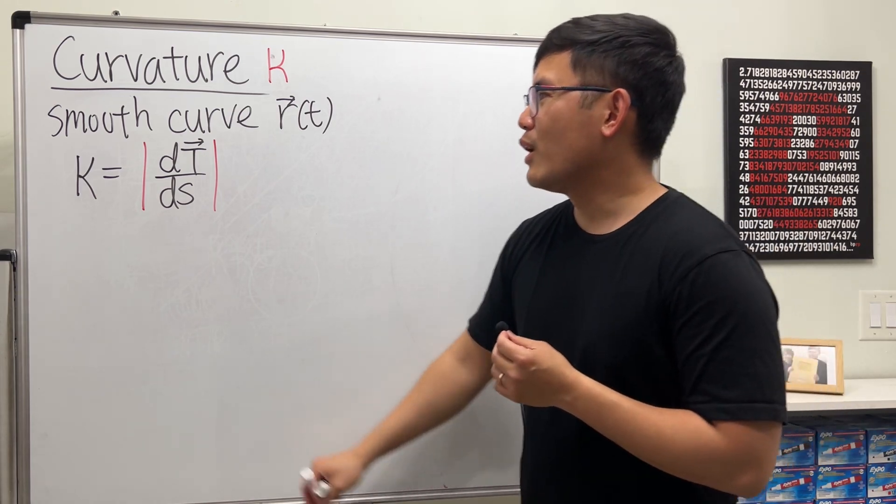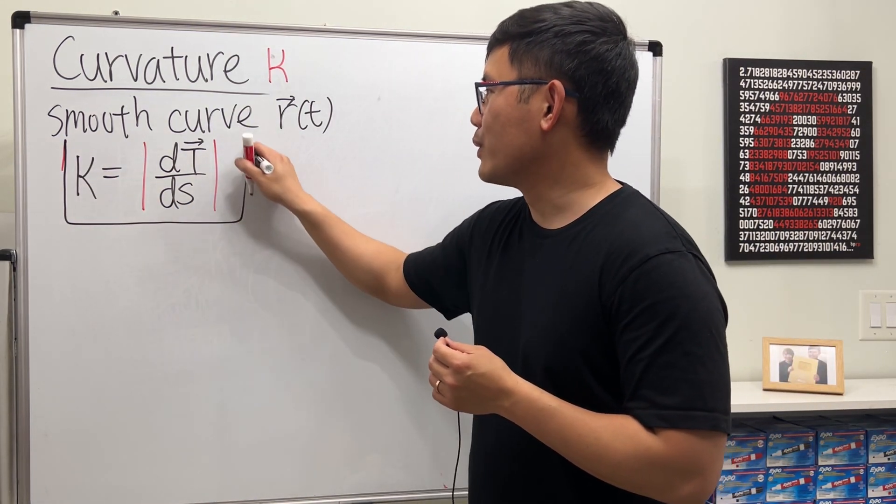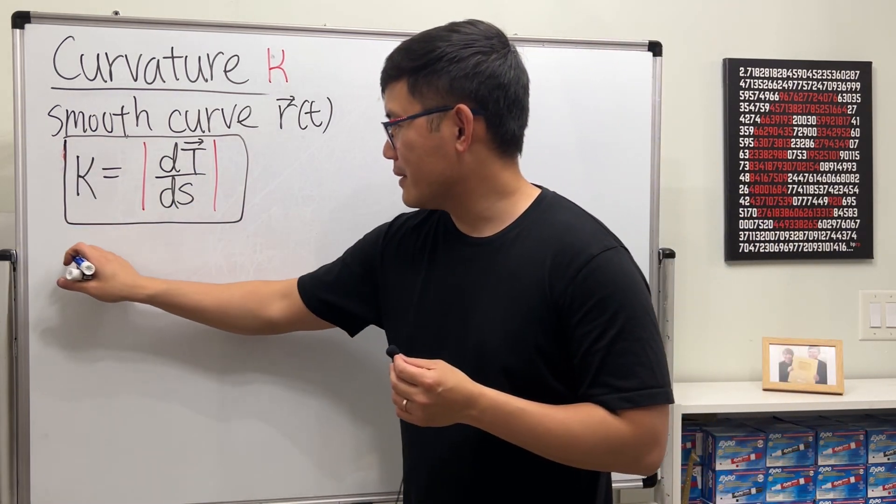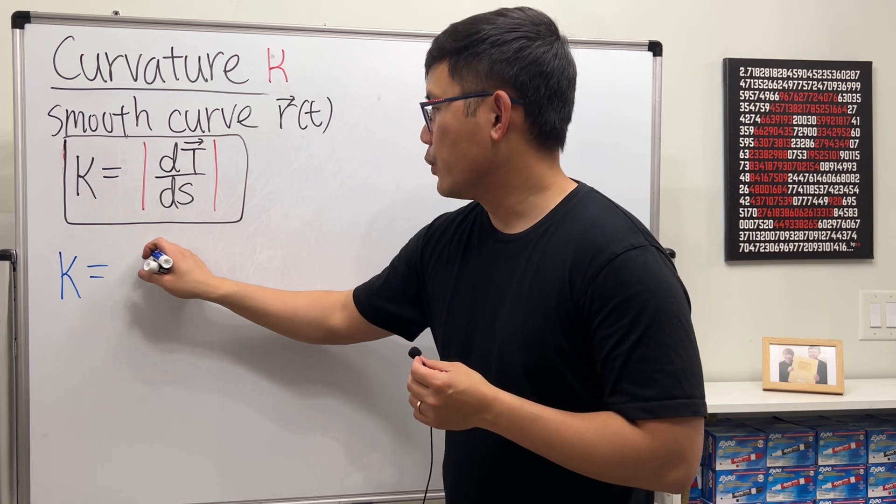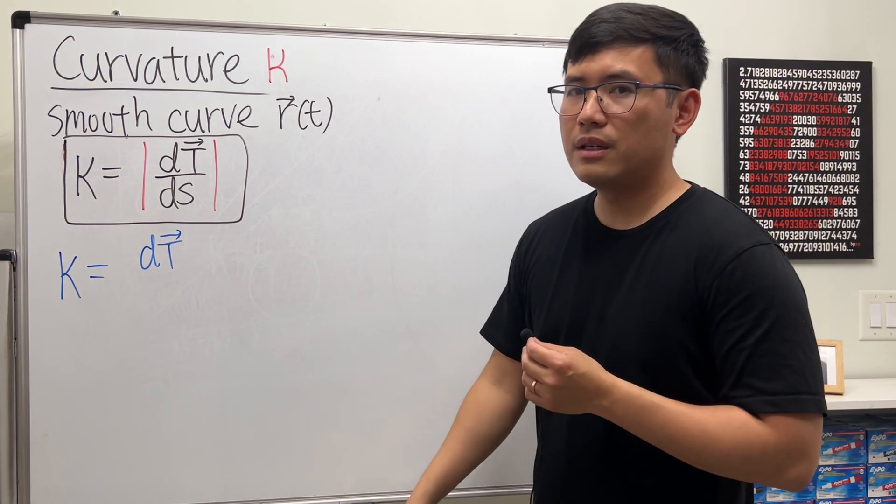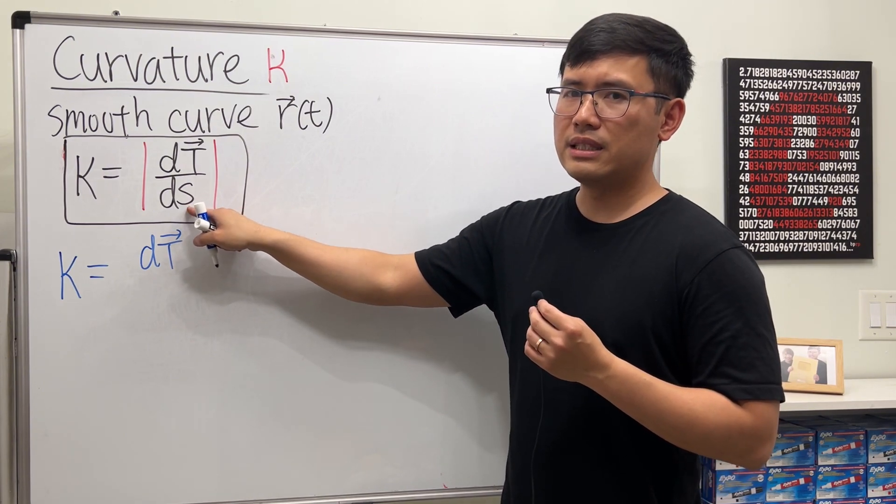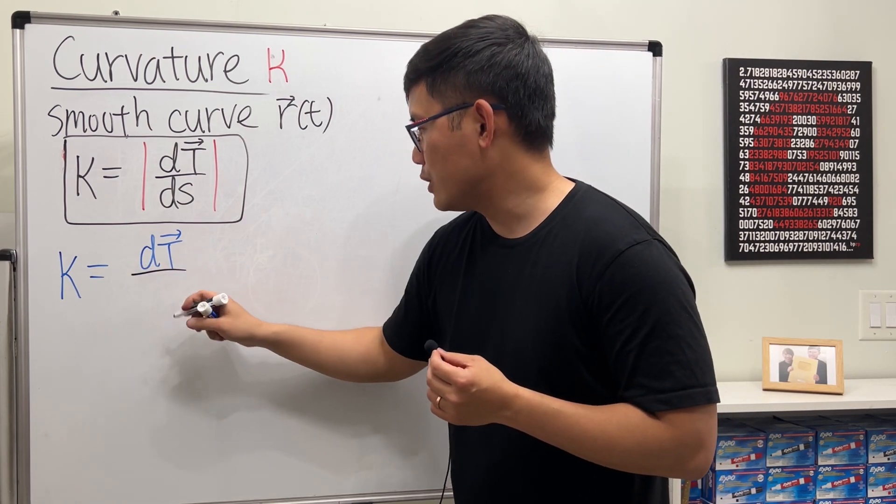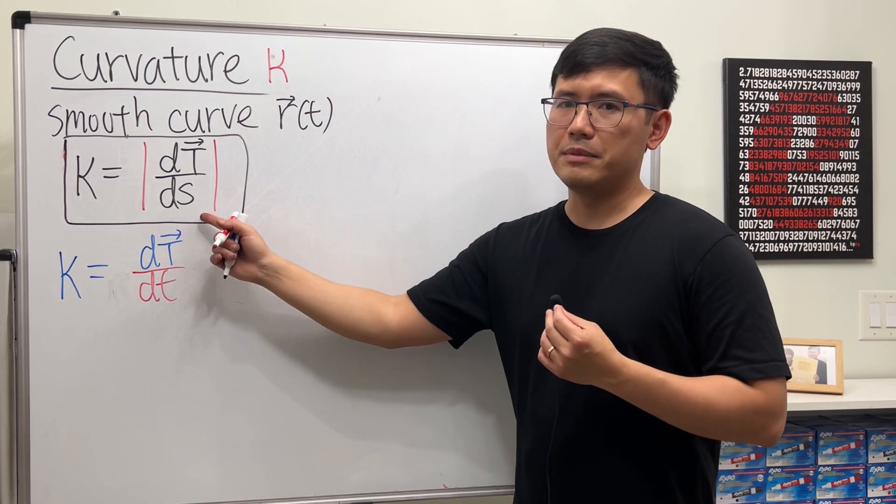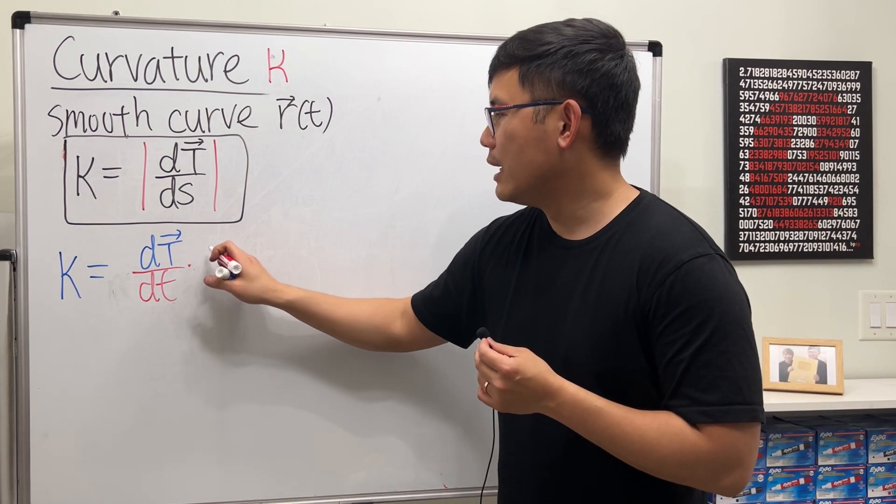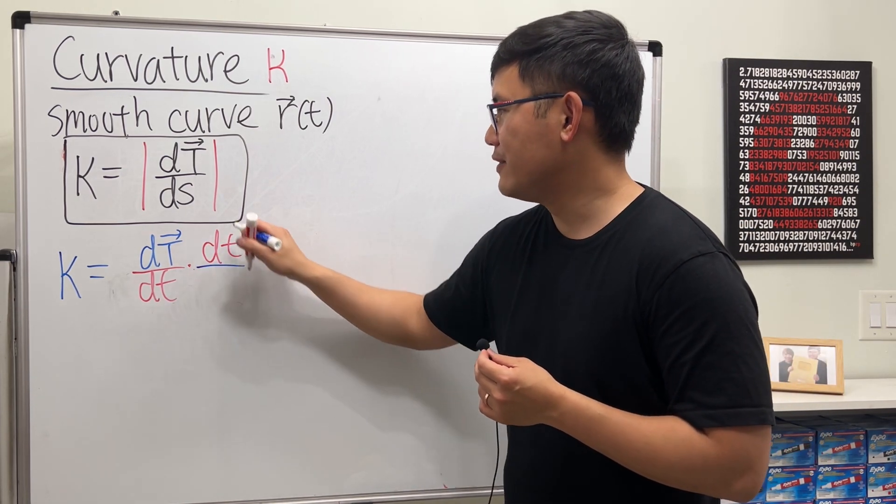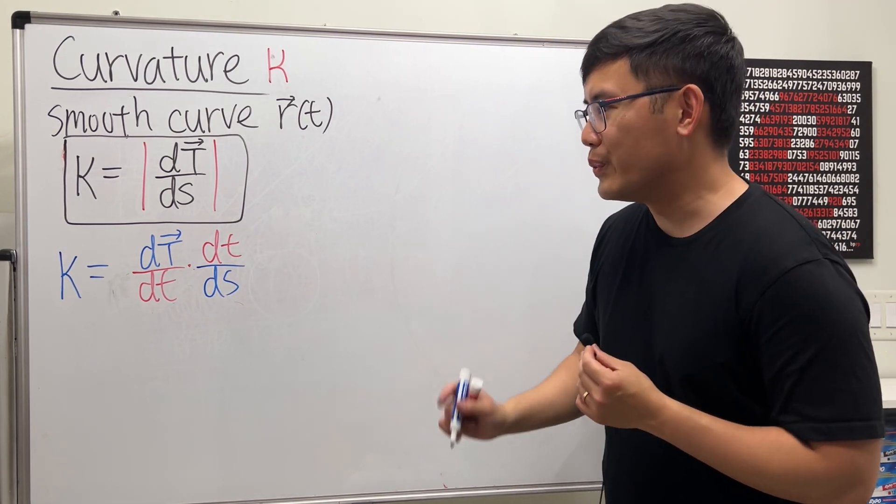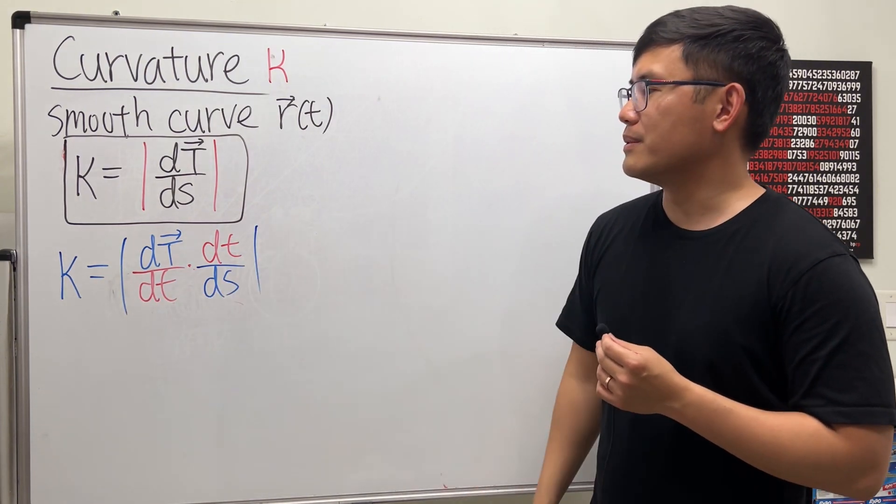That's pretty much the definition, but unfortunately this is not so useful because our function has t and this has s. So what do we do? Well, I will do that for you guys—just do more math, of course. Have a look. We know curvature is equal to the derivative of the unit tangent vector, but I really don't want to do it with respect to s. I really want to do it with respect to little t. Let's just do it with respect to little t.